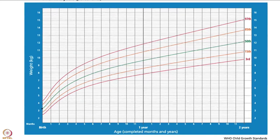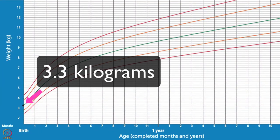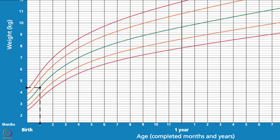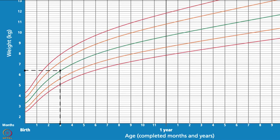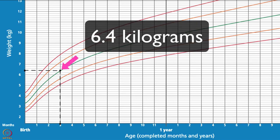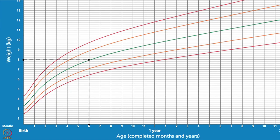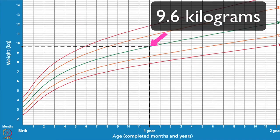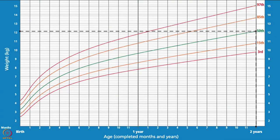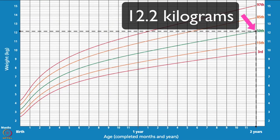The average birth weight of a boy is 3.3 kgs. At 1 month a boy's average weight is 4.4 kgs, at 3 months it is 6.4 kgs, at 6 months it is 8 kgs, at 1 year it is 9.6 kgs, and at 2 years it is 12.2 kgs.